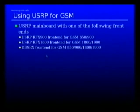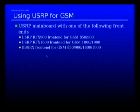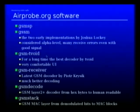A USRP main board has a couple of front-ends. For GSM, you can use three front-ends: the RFX-900 for GSM 850 and 900 megahertz, the RFX-1800 for 1,800 and 1,900 megahertz GSM signals, and the DBS-RX front-end, which is a receive-only front-end sufficient for protocol demultiplexing and usable on all frequencies. However, the sensitivity is very low, so you can only receive strong signals with that board.